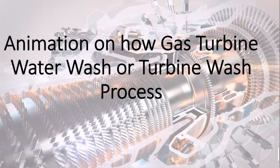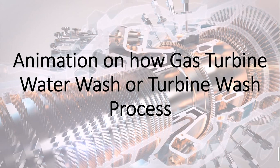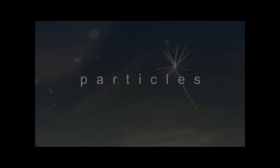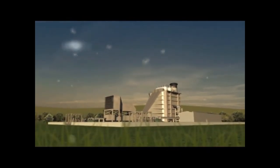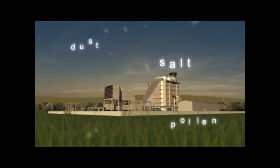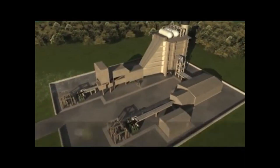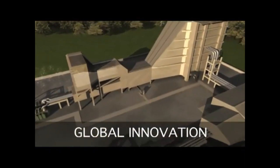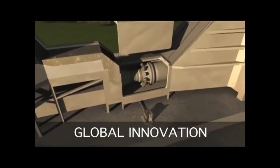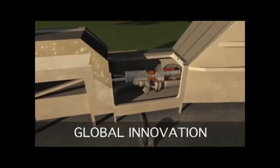Animation on how gas turbine water wash or turbine wash process works. In the air there are particles — tiny particles — generated by manufacturing, transportation, and Mother Nature in the form of dust, pollen, salt, and other contaminants. Large quantities of these particles or contaminated air make it all the way to the compressor section of a gas turbine.